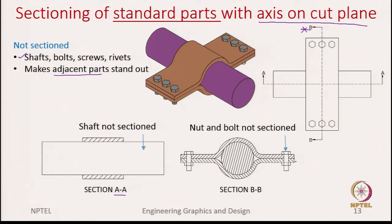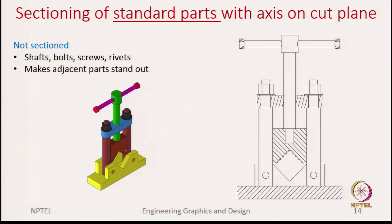Let us apply these principles to the vise example we have been discussing. When we section it with a cut plane — let us say a vertical plane that cuts it symmetrically through the handle — we again notice that the bolts and nuts are not sectioned.